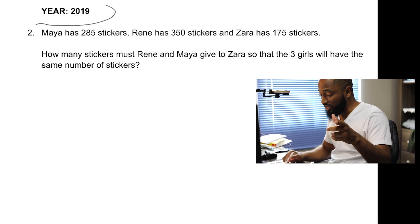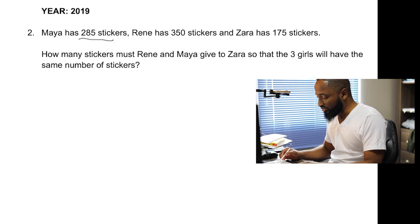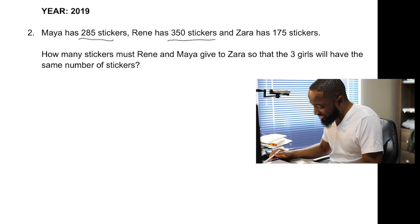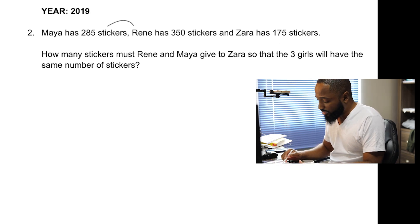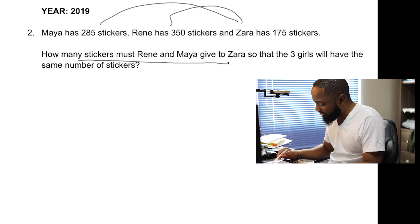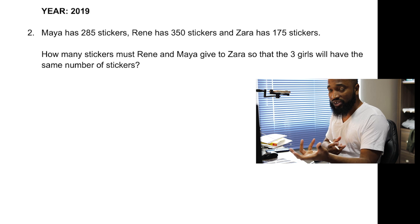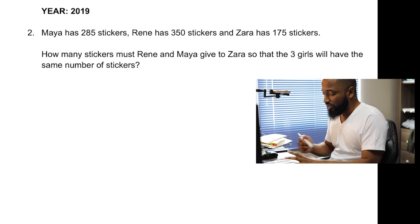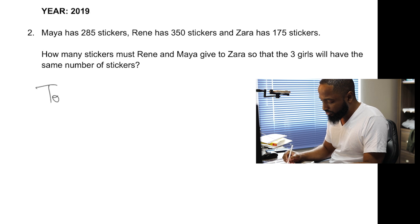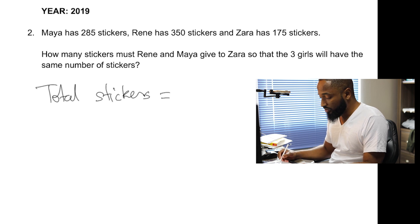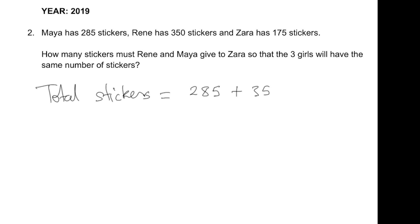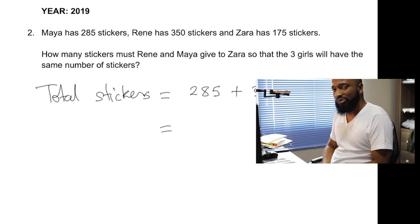Let's look at another style. This came in 2019. Maya has 285 stickers, Rennie has 350 stickers, and Zara has 175 stickers. How many stickers should Rennie give to Zara, and how many should Maya give to Zara, so that they all have the same number? We have a quantity that's unequally shared, and to solve it we need to find what equal sharing looks like. First, find the total number of stickers. Pause the video and solve the question.